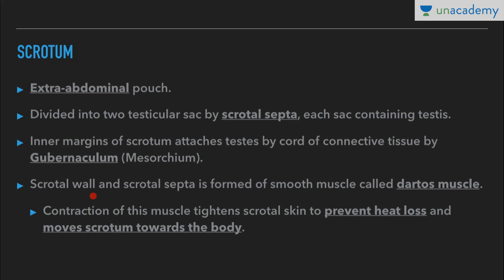The scrotal wall and scrotal septa are formed of smooth muscle called dartos muscle. Contraction of dartos muscle tightens the scrotal skin, which reduces the surface area and thus prevents heat loss, and moves the testis towards the body.